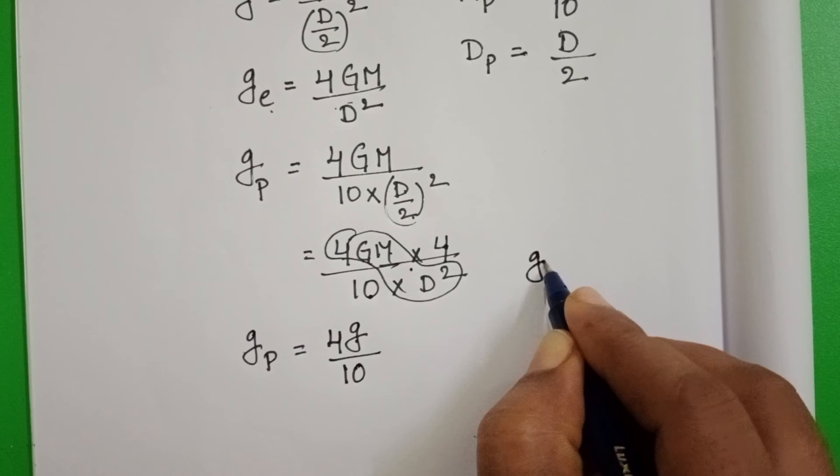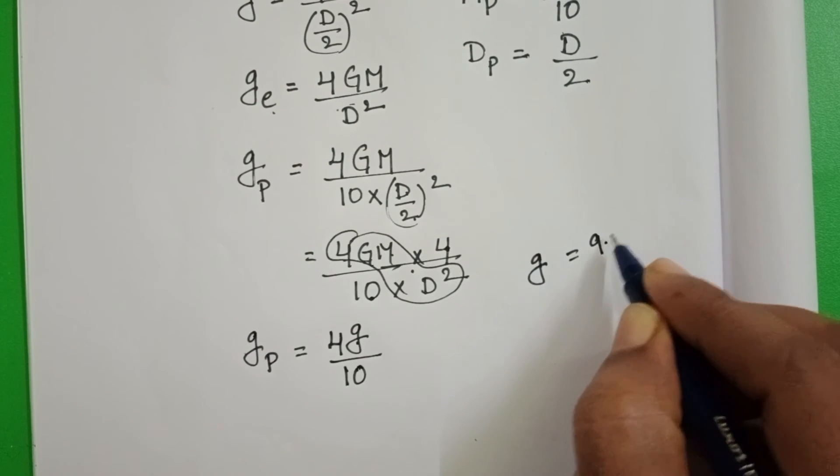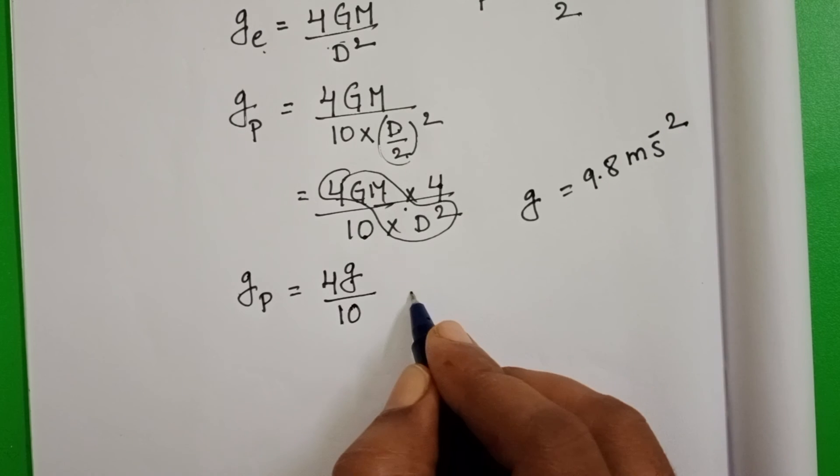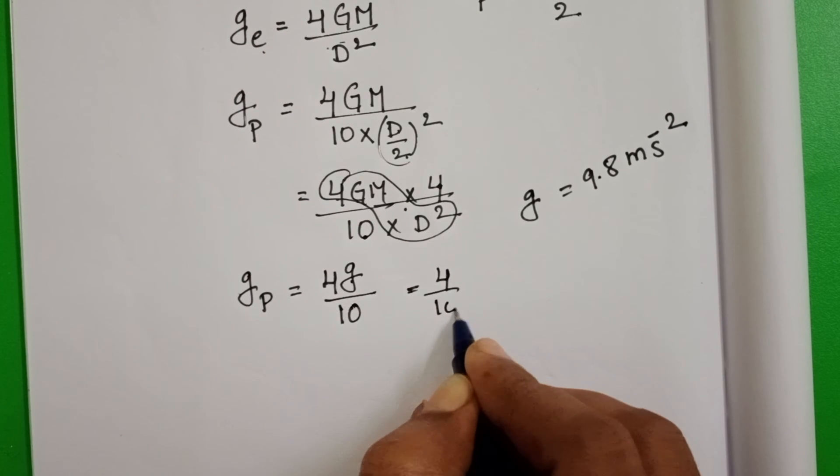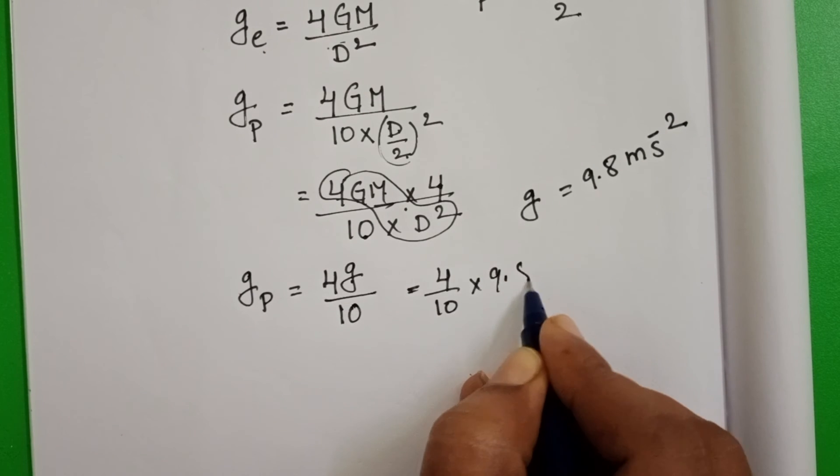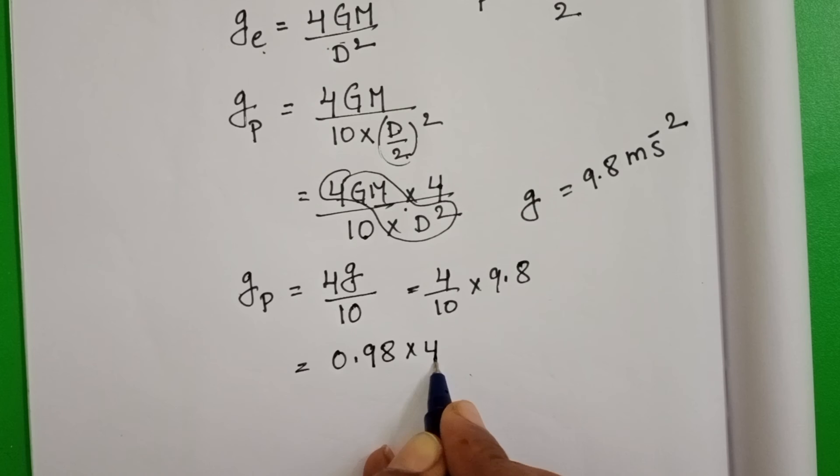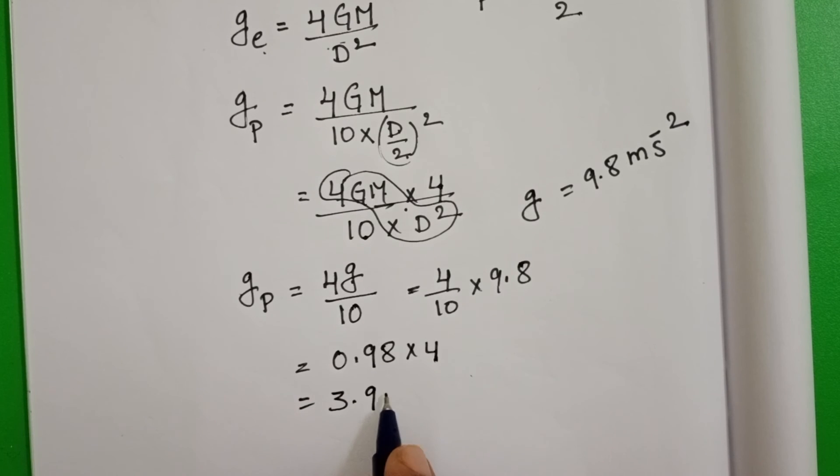Take acceleration due to gravity on the surface of the earth is 9.8 meter per second square. 4 by 10 into 9.8. Then 0.98 into 4, 3.92 meter per second square.